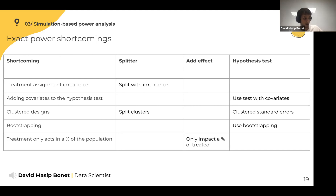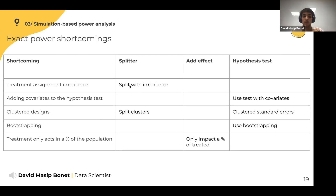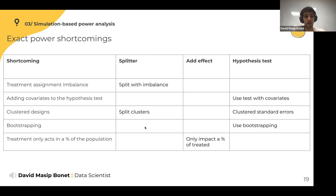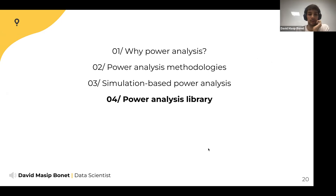To handle the shortcomings identified with exact power analysis: for imbalance, you can split with imbalance in the simulation. When adding covariates to the hypothesis test, you simply run the same test you plan to use when you have data. For cluster designs, split the clusters the same way as in the experiment and use cluster standard errors when running the hypothesis test. For bootstrapping, run bootstrapping as the hypothesis test. If the treatment only impacts a percentage of the treated population, only add the effect to that percentage.